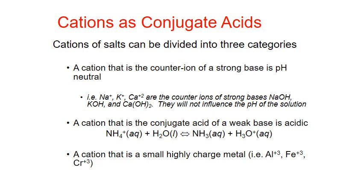Cations that are the conjugate acid of a weak base can act as an acid and turn the solution acidic. Ammonium ion and other compounds that contain an NH group are great examples of this. The ammonium ion will give a proton to water to form hydronium ion and ammonia, NH3. If ammonium is present in a solution from a salt such as NH4Cl, ammonium chloride, the solution will be acidic.